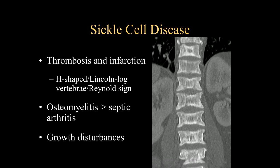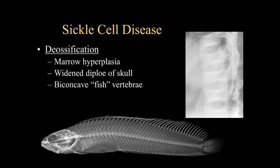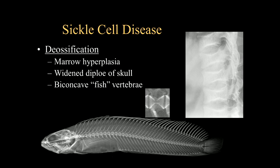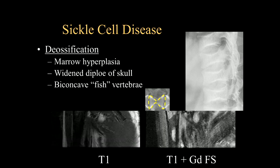Growth disturbances have also been mentioned. On CT of the sickle cell patient, you see the classic end plate compression fractures right in the central portion of the vertebral end plates, and overall sclerosis with coarsening of the trabeculae due to the abnormal marrow. With that packing of the cells, you can have deossification where there's marrow hyperplasia, widening of the skull. This case shows fish vertebrae — the smooth indentation compression fractures. Looking at the radiograph of the salmon, this is what we're referring to as fish vertebrae with that biconcave shape. Fish mouth and codfish are also synonyms.